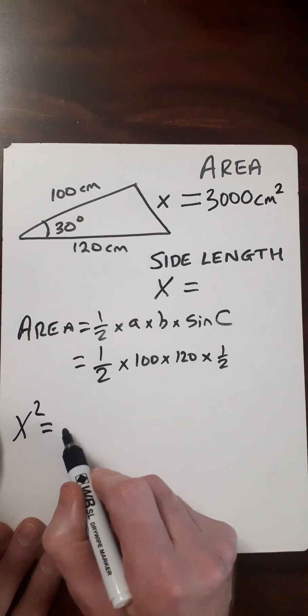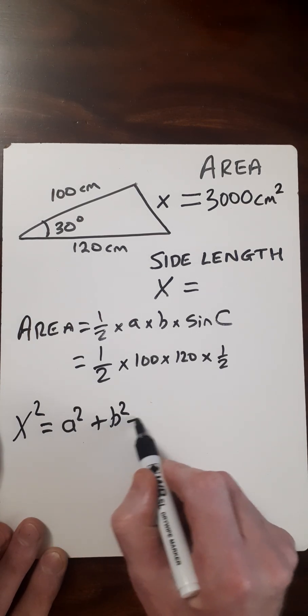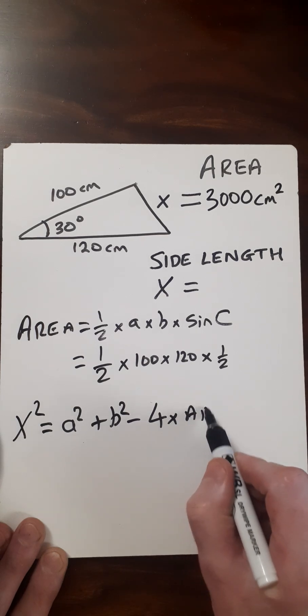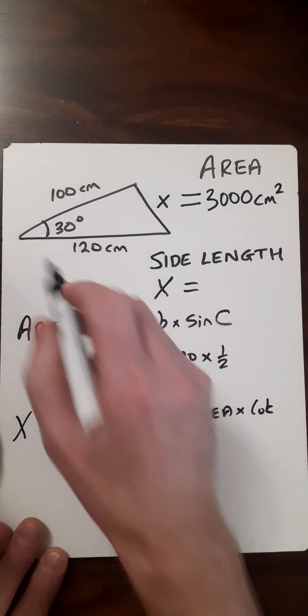We do X squared equals A squared plus B squared minus four times the area times the cotangent of this angle here, which we'll call C.